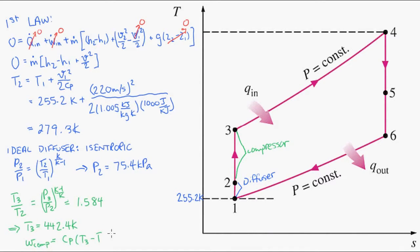Taking the difference of the temperatures multiplying by the heat capacity we can find out the work done by the compressor. So the compressor work is equal to about 163.9 kilojoules per kilogram.